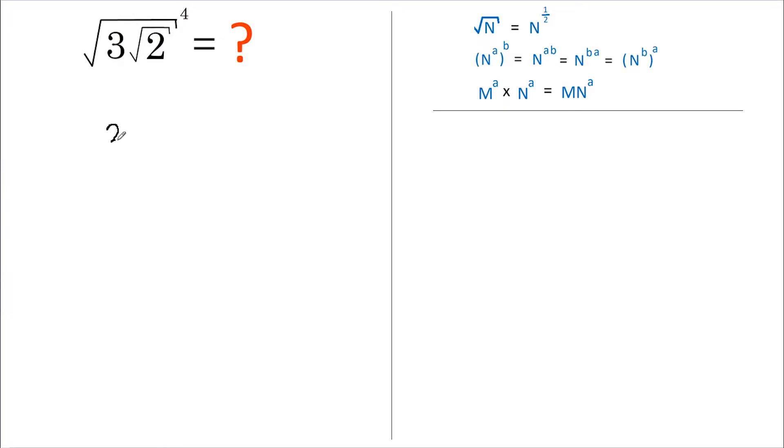So 3 root 2, instead of the root sign, I'm going to raise that to the power of a half, and all of this is then raised to the power of 4. Now this rule here tells us that if we have a number raised to a power and all of that is raised to another power...